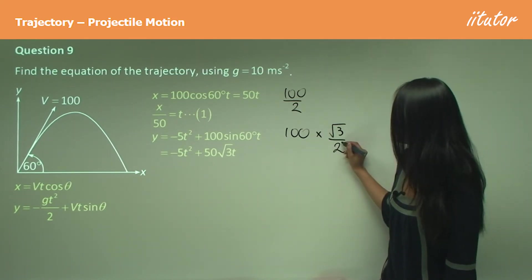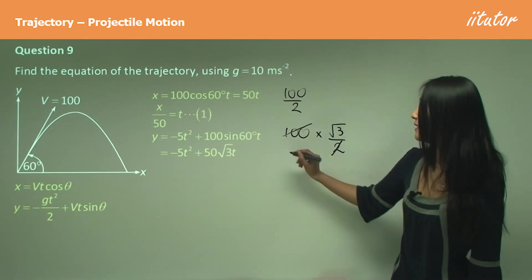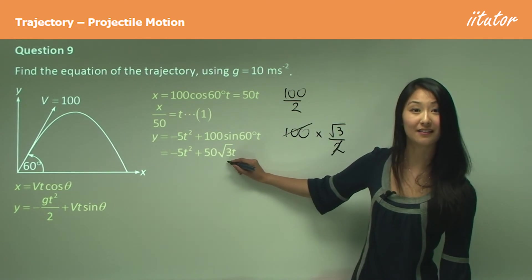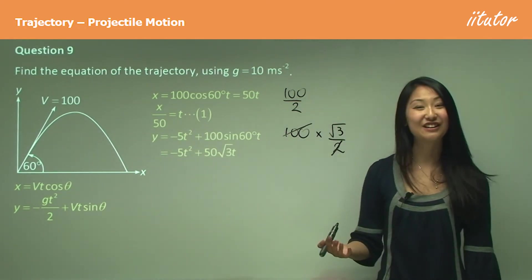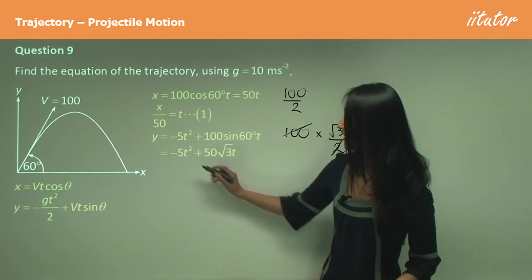So that's how we get there. And now what do we need to do? We want to eliminate the t. So that means wherever there's t, so here and here, I want to substitute in x over 50.